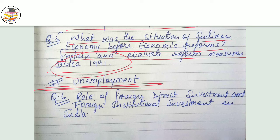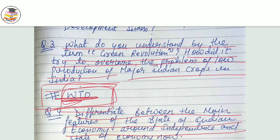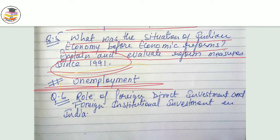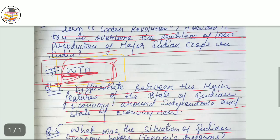Next is unemployment — the unemployment topic comes up every year without fail, so you will cover it and all the questions in that topic. You should have two key topics ready: WTO and unemployment. Additionally, the role of Foreign Direct Investment and Foreign Institutional Investment in India is an important question that has come up frequently, so cover FDI and FII as well.